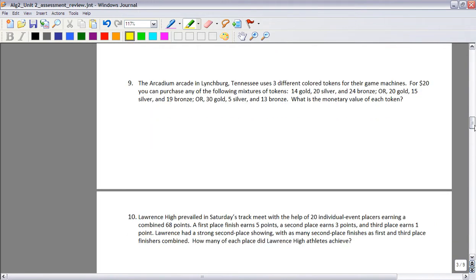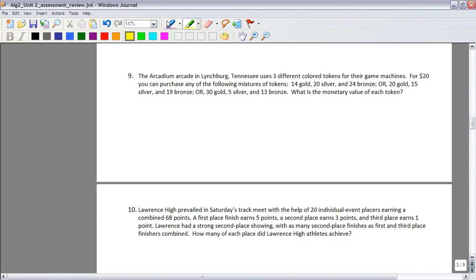Let's go to 9. 9, the first thing you need to make a decision is, is this a linear programming problem? And it's not. You're just trying to figure out the value of these coins. So this is when we can set up with a system of equations. So three different colors of tokens. For $20, you can get the following mixture of tokens. 14 gold, 20 silver, 24 bronze, or 20 gold, 15 silver, 19 bronze, or 30 gold, 5 silver, 13 bronze. What is the monetary value of each token? So $20 worth of tokens.